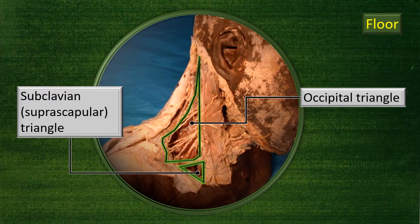Below the occipital triangle is the subclavian or suprascapular triangle. In this triangle there is no trapezius. It is bordered by the posterior border of the sternocleidomastoid, the omohyoid superiorly, and the clavicle bone inferiorly.